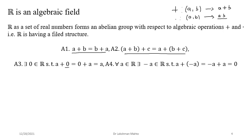The fourth property says: for any real number a, there exists a unique real number −a such that a + (−a) = 0, the identity element. We call −a the additive inverse or the negative of a. For every real number there is a negative number, an additive inverse. So that is the fourth property.